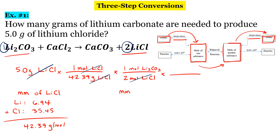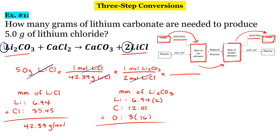The molar mass of lithium carbonate: we've got lithium, which is 6.94, and there are two of those. We have carbon at 12.01, and then we have oxygen — there are three of those, and each one is 16. When you add that all up, I get 73.89 grams per mole. So for every one mole of lithium carbonate, we have 73.89 grams of lithium carbonate.